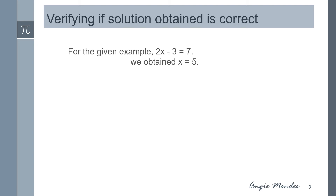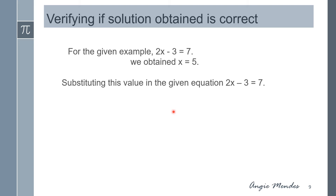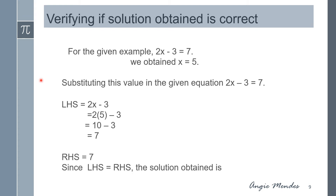Now we need to verify if the solution is correct. The given equation was 2x minus 3 equal to 7, for which we obtained x equal to 5. Substituting: the left hand side is 2 times 5 minus 3, which gives 7. The right hand side is also 7. Since left hand side equals right hand side, the solution is correct.